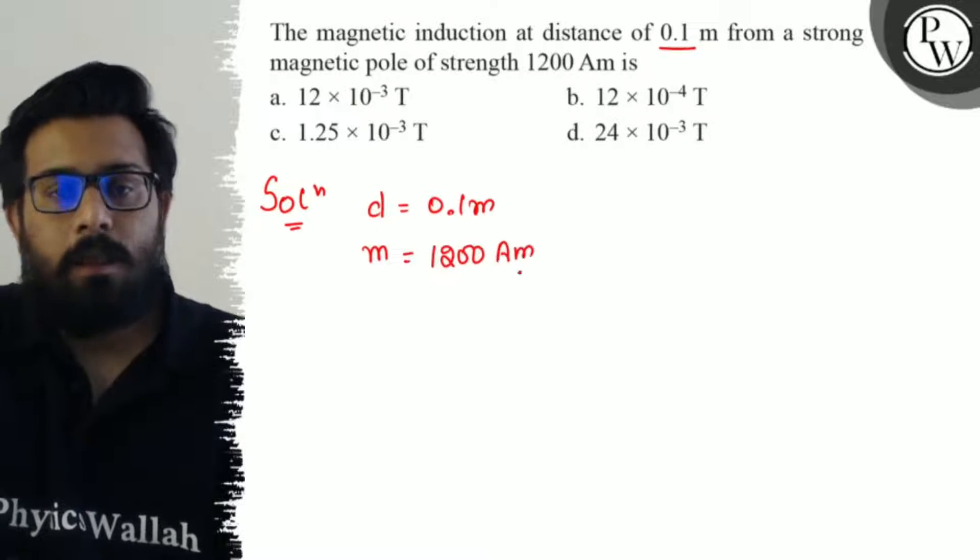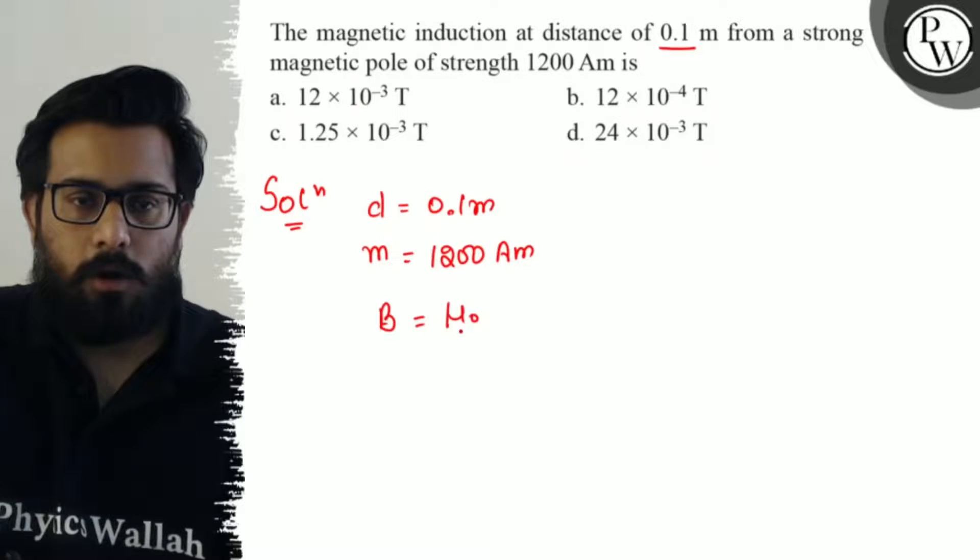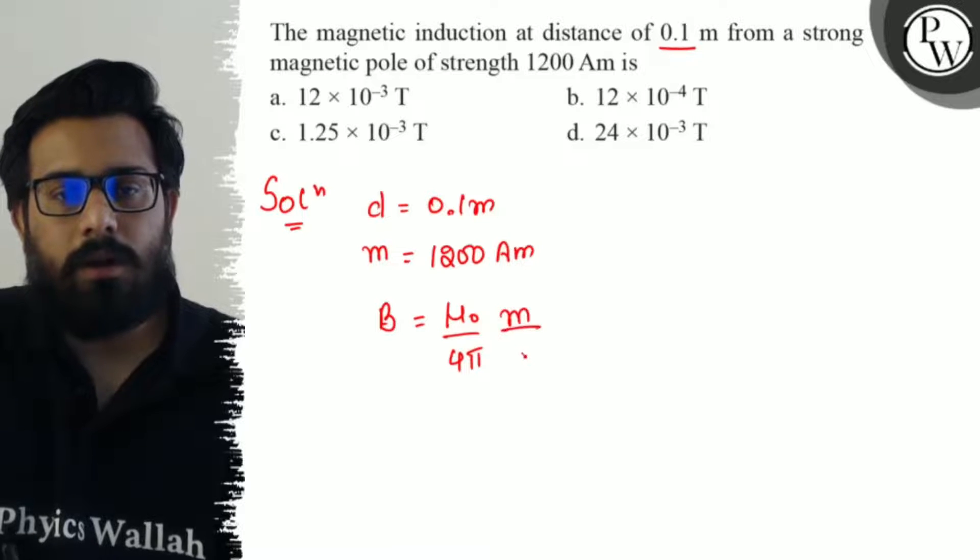The formula is B = μ₀/4π times m/d², where m is the pole strength and d is the distance.